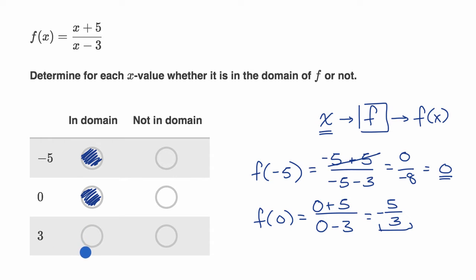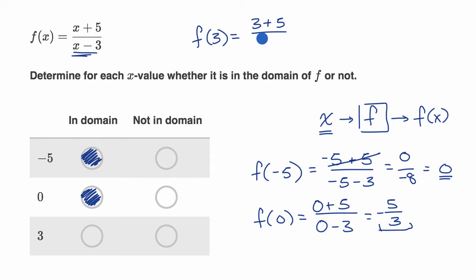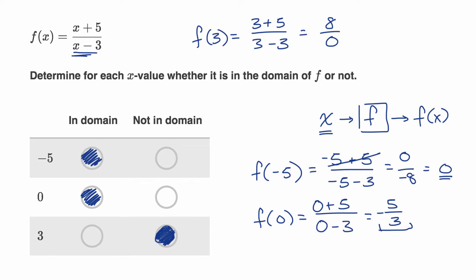Now what about x equals three? f of three — you might already see some warning signs in the denominator. In the numerator we get three plus five, in the denominator we get three minus three. So this is going to be equal to eight over zero. What is eight divided by zero? We haven't defined what happens when something is divided by zero — this is one of those fascinating things in mathematics. So three is not in the domain; the function is not defined there.